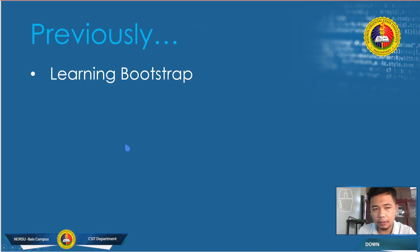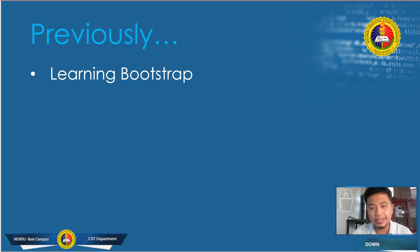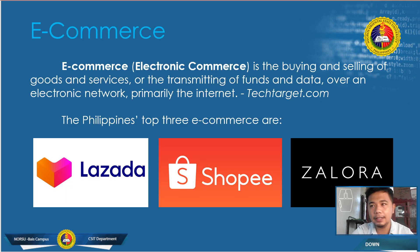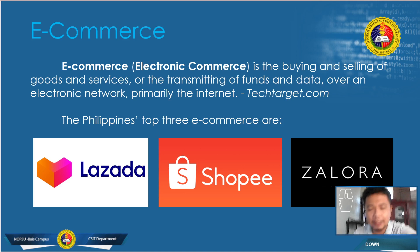Previously we've already discussed how to use Bootstrap, and we've already created some of the websites like the landing page and additional web pages. This time around, we're going to finalize all the web pages we'll be needing for our website. As a review: e-commerce refers to the buying and selling of goods and services, or transmitting of funds and data over an electronic network, primarily the internet. The e-commerce site we decided to create is a shoe website.